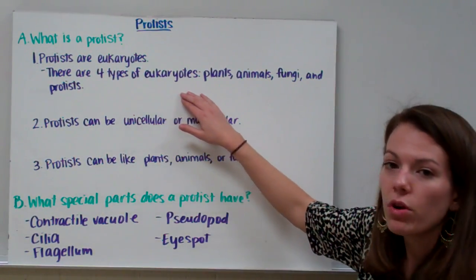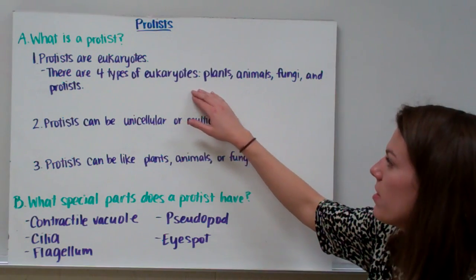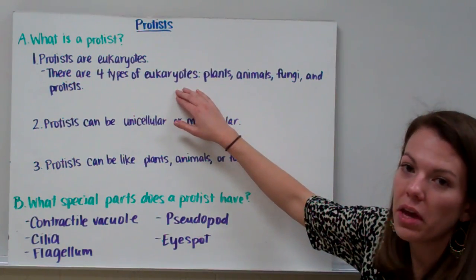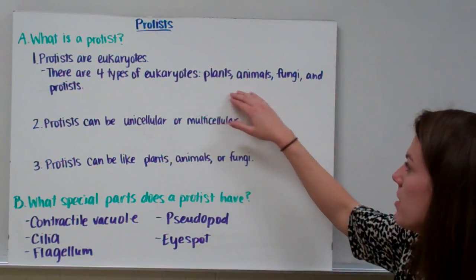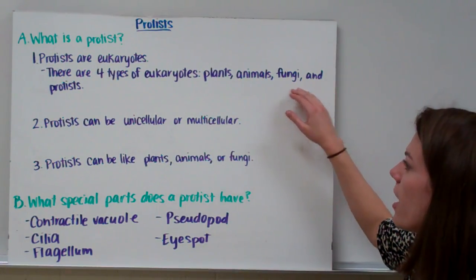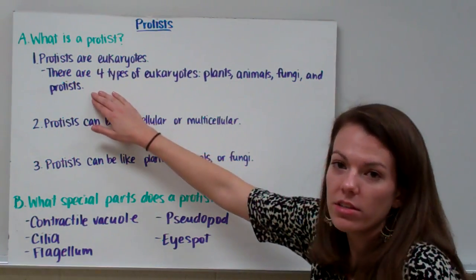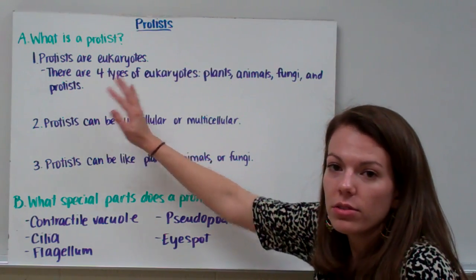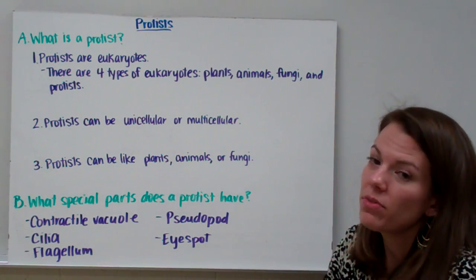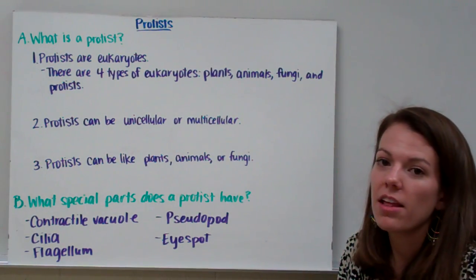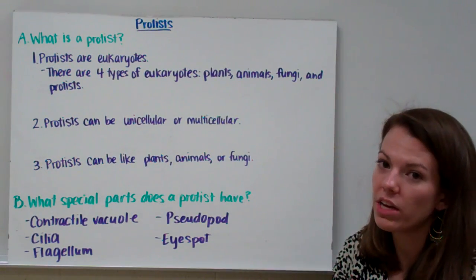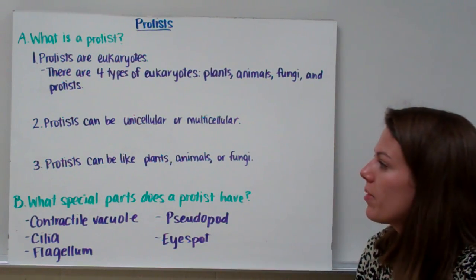There are four types of living things that are eukaryotes: plants, animals, fungi, and protists are all eukaryotes. Bacteria are not complicated and they go in our prokaryote group.